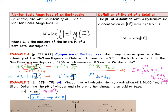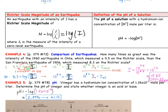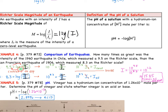To compare the intensities, we divide the Chilean value by the San Francisco value: 10 to the 9.5 over 10 to the 8.3. Since the bases are the same, we subtract the powers: 9.5 minus 8.3 gives 10 to the 1.2. On the calculator, that's about 15.85. So the Chilean earthquake was about 15.85 times as intense as the San Francisco earthquake — a much bigger difference than the 9.5 to 8.3 magnitude numbers suggest.